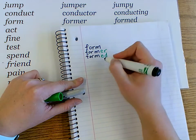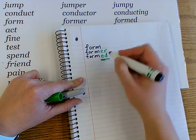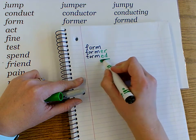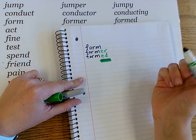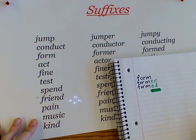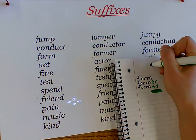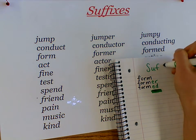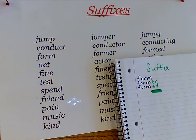This part here that I've added in green is called a suffix. A suffix is a few letters that you can add onto another word to change its meaning.